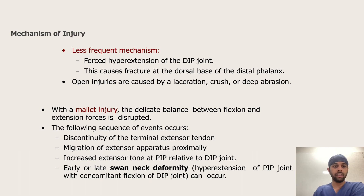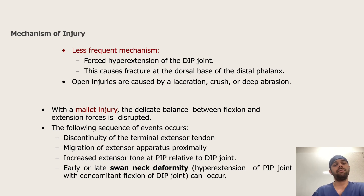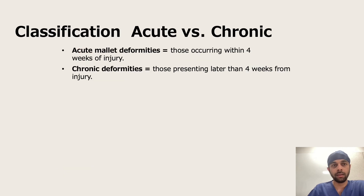With mallet finger, there must be a delicate balance between flexion and extension forces. If this is disrupted, it leads to discontinuity of the terminal extensor tendon, proximal migration of the extensor apparatus, and increased tension at the PIP relative to the DIP — and can finally lead to an early or late swan neck deformity, as discussed in the previous slides. Classification: acute — occurring within 4 weeks of injury; chronic — presenting later than 4 weeks.